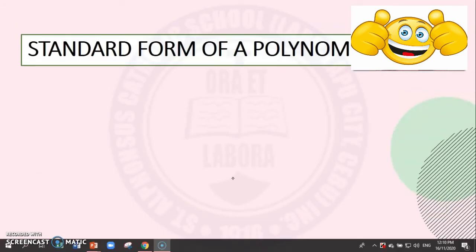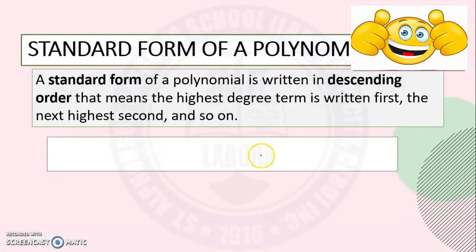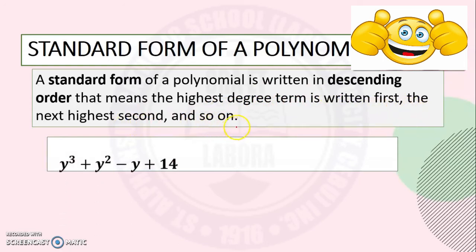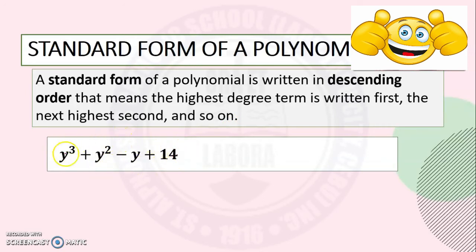Now let's talk about the standard form of a polynomial. A standard form of a polynomial is written in descending order — the highest degree term is written first, the next highest second, and so on. For example: y cubed plus y squared minus y plus 14. The highest is degree 3, followed by 2, then 1, then the constant 14. This polynomial is already in standard form.